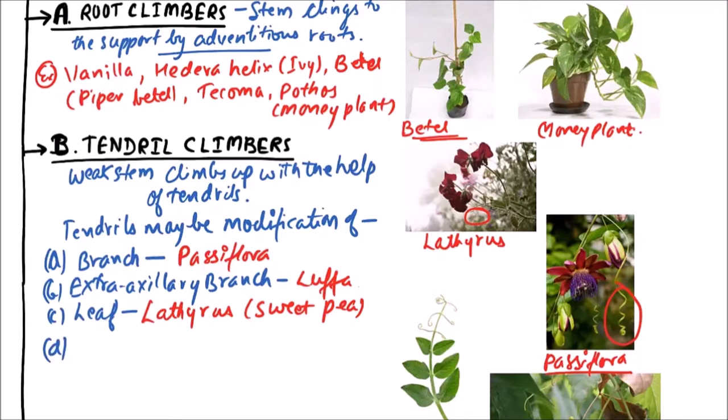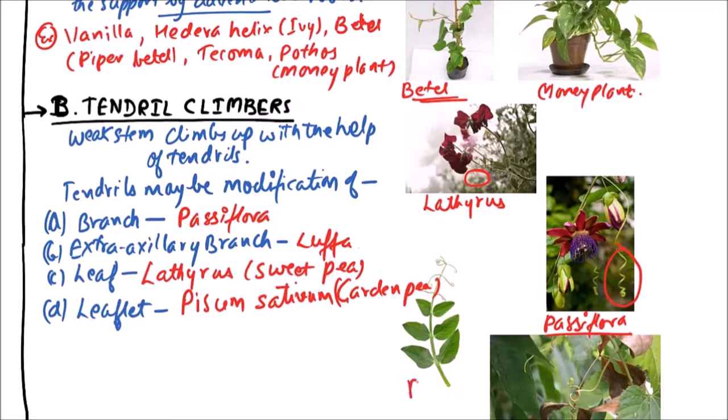Then there may be leaf lats which can be modified into tendrils and such tendrils can be observed in Pisum sativum that is garden pea. So this is Pisum sativum that is garden pea. So this is Pisum the garden pea and these are the tendrils.